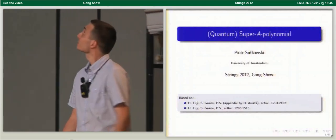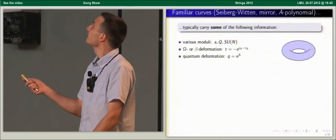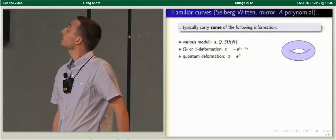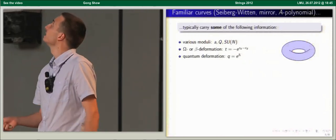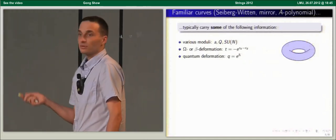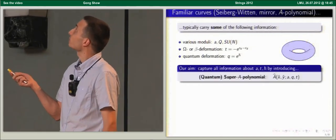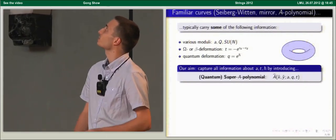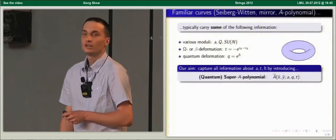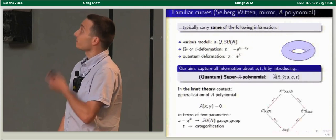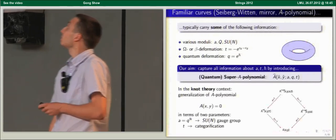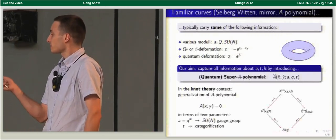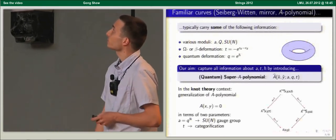The title of my talk is Quantum Super-A Polynomial, based on recent work with Hiroyuki Fuji and Sergei Gukov. In some exactly solvable theories, certain quantities can be encoded in algebraic curves or Riemann surfaces — like the Seiberg-Witten curve, mirror curves, or A polynomials. These quantities include dependence on various moduli, omega or beta deformation, or quantum deformation. I'd like to introduce an object that captures all this information at once, which I call the quantum super-A polynomial, or simply the super-A polynomial when quantum deformation is turned off.